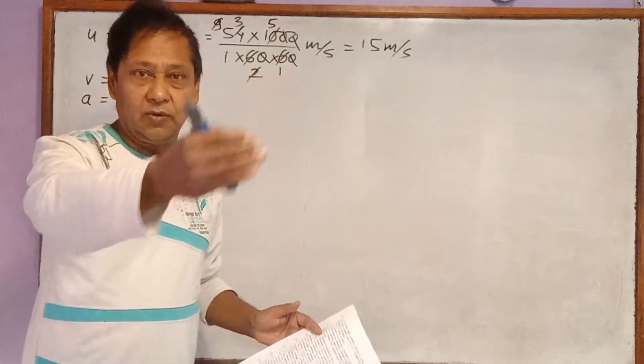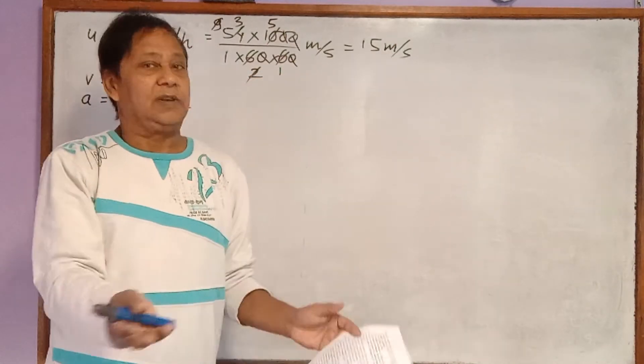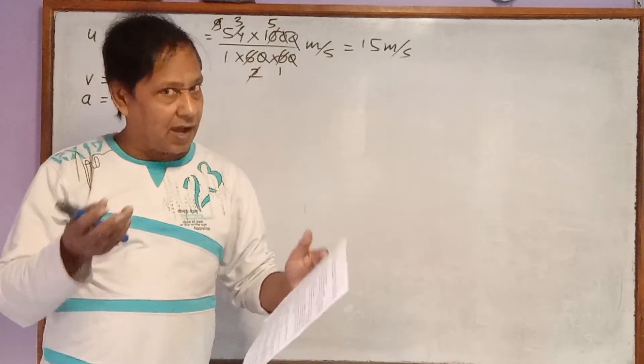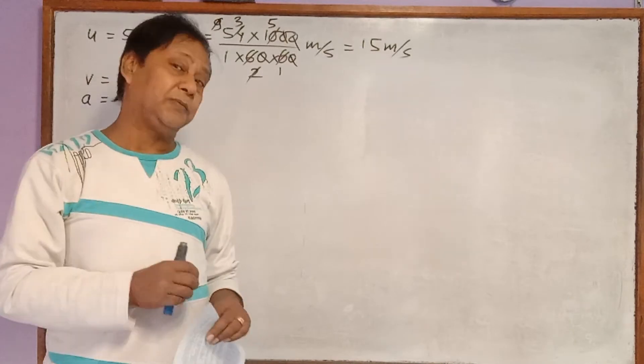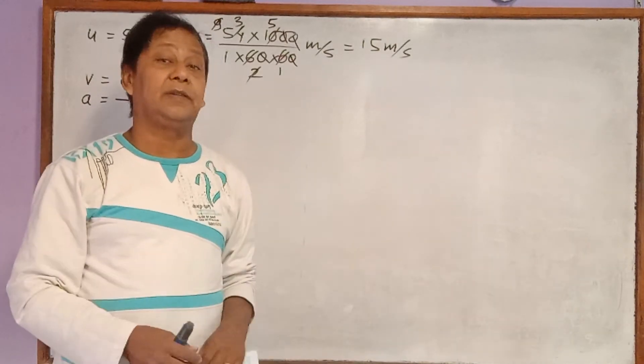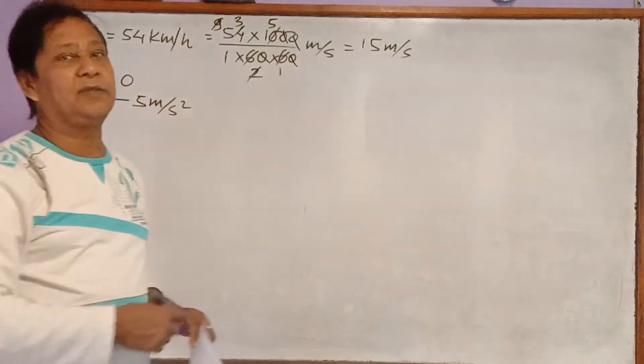Actually the 25 meter was not the distance covered by the car, and that's why we are not considering this here. Another point is whether accident occurs or not. What we have to find out? Actually we have to find out distance.